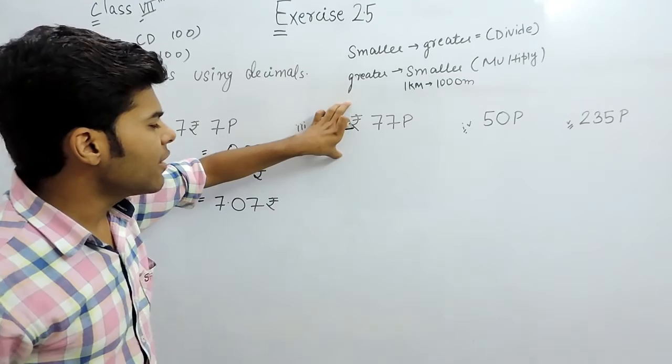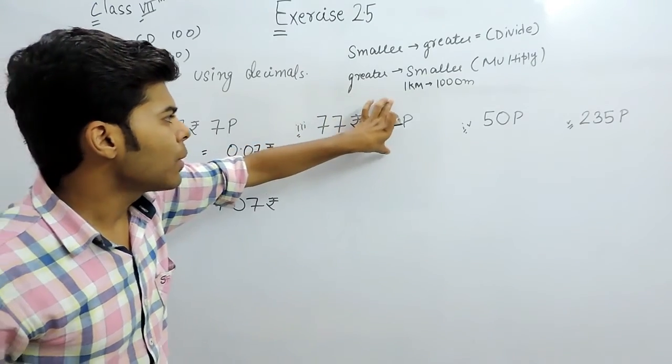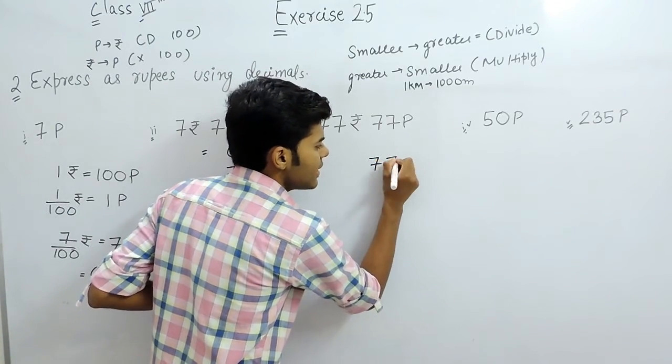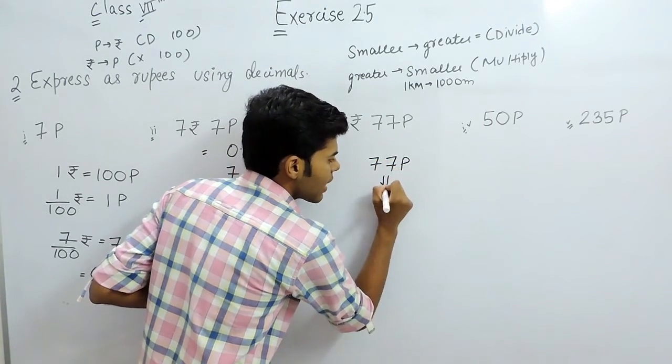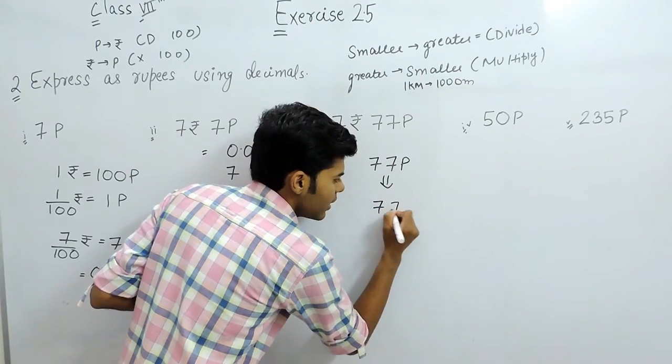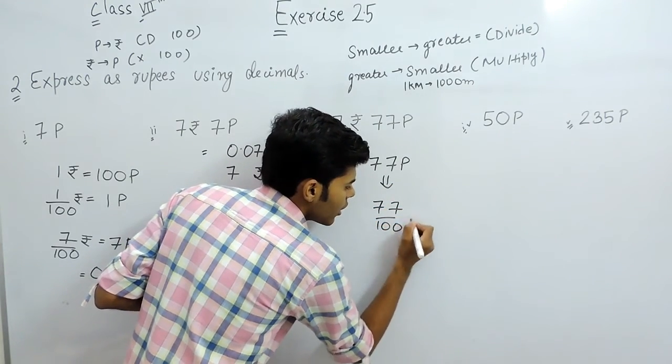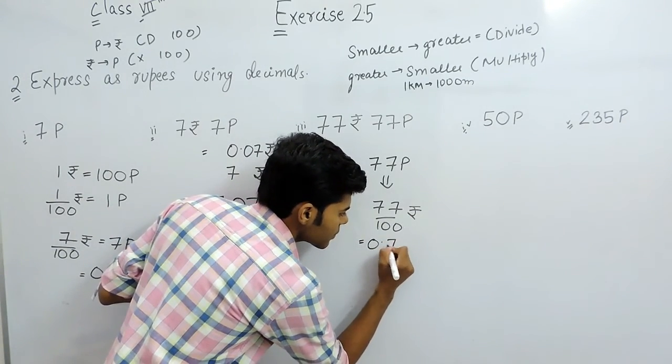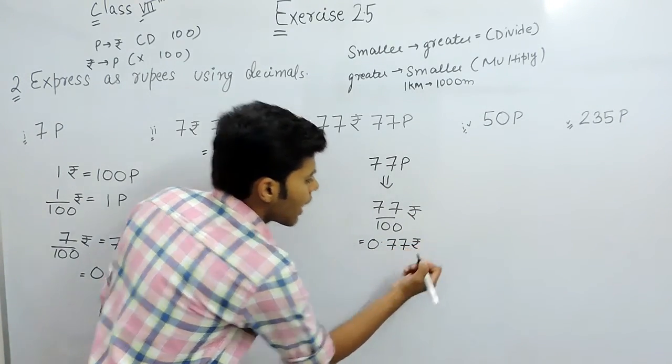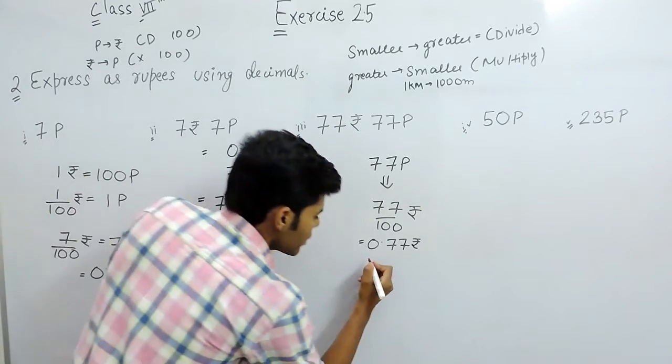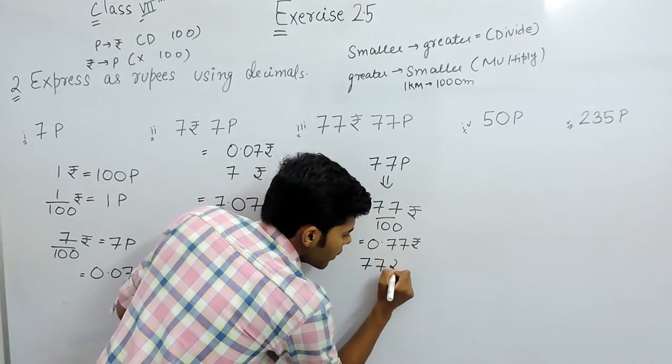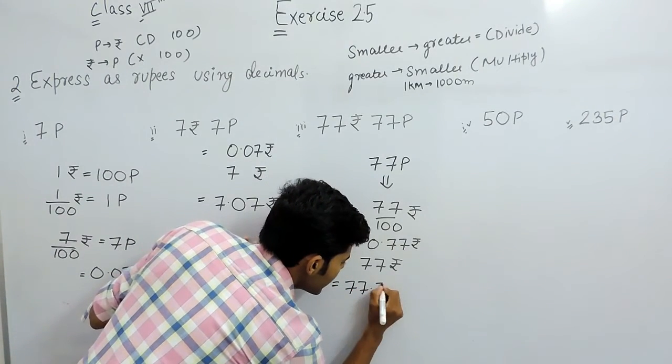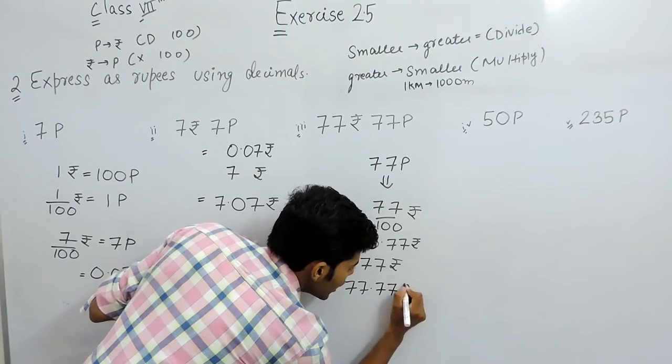The third part: we will keep this 77 rupees as it is and we will convert this 77 paisa in rupees. 77 paisa will give us 77 by 100 rupees and that will be 0.77 rupees. And we already have 77 rupees, so we will add them and it will give us 77.77 rupees.